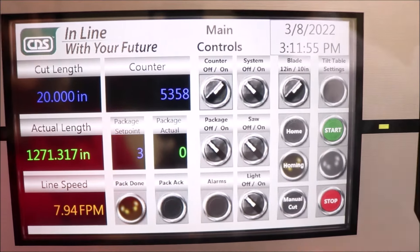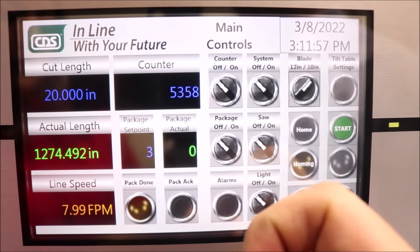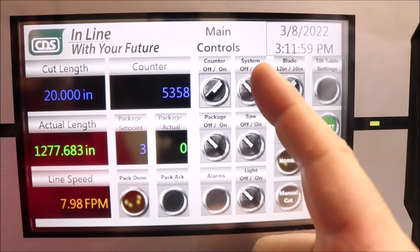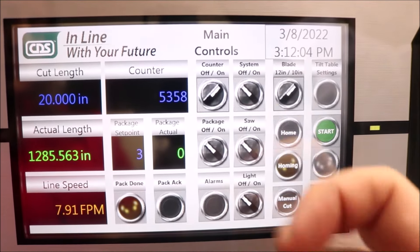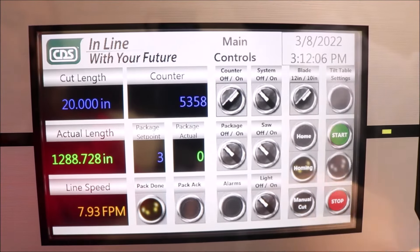Some of the other buttons are the counter to have it on or off, the system on, and then the saw on or off to activate your saw. These buttons will be needed when you start the machine, and we will do a start sequence later.